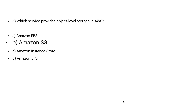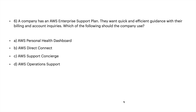A company has an AWS Enterprise Support plan. They want quick and efficient guidance with their billing and account inquiries. Which of the following should the company use? A: AWS Personal Health Dashboard, B: AWS Direct Connect, C: AWS Support Concierge, or D: AWS Operations Support.